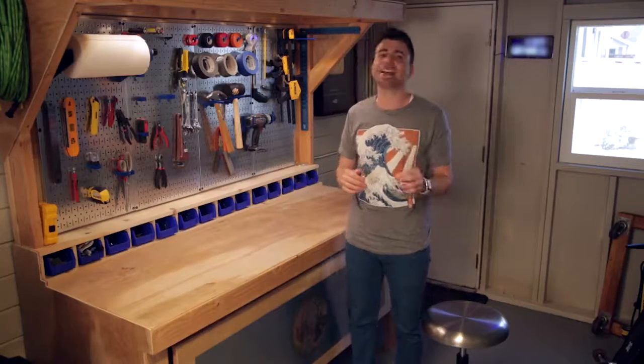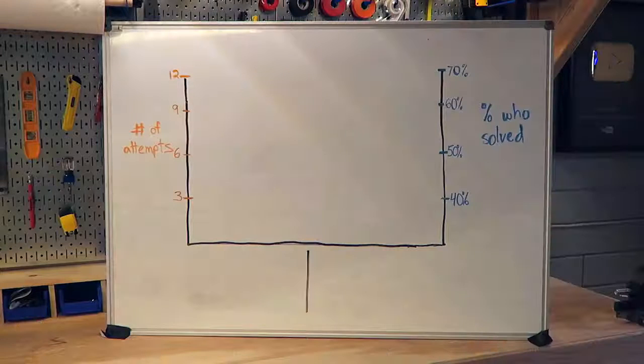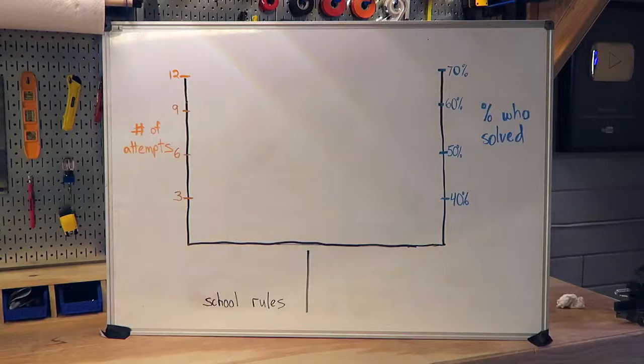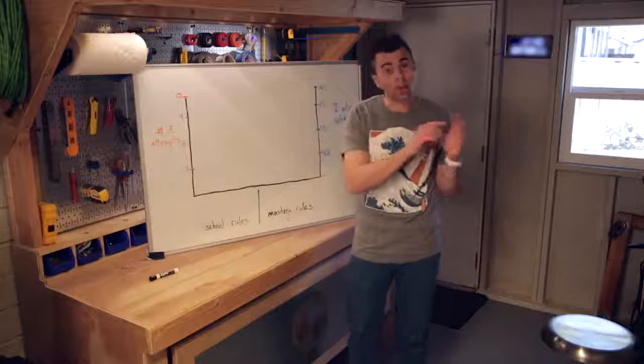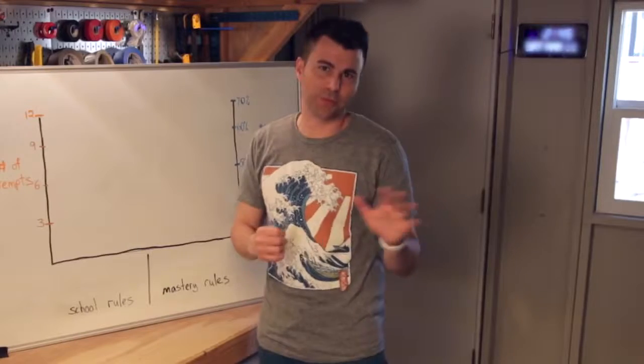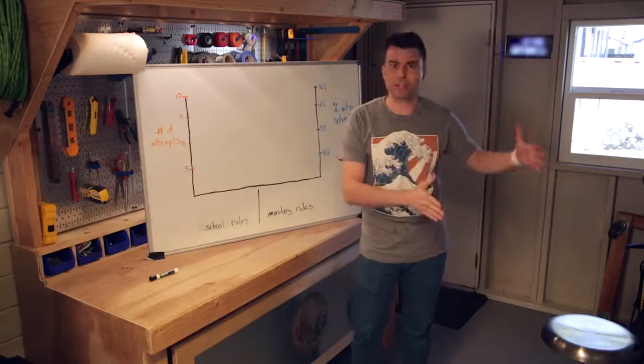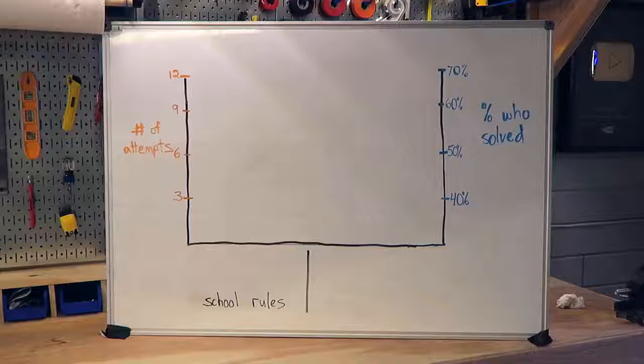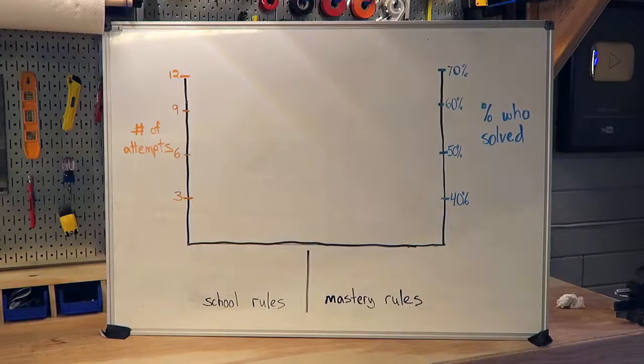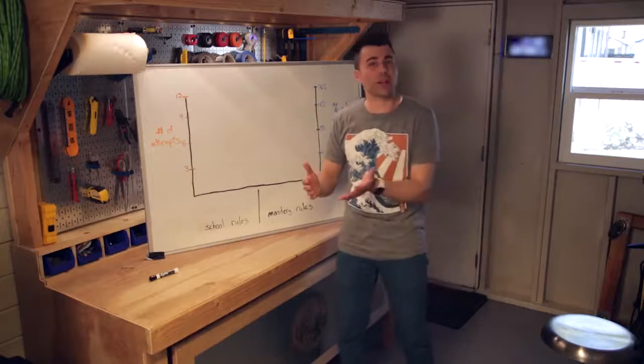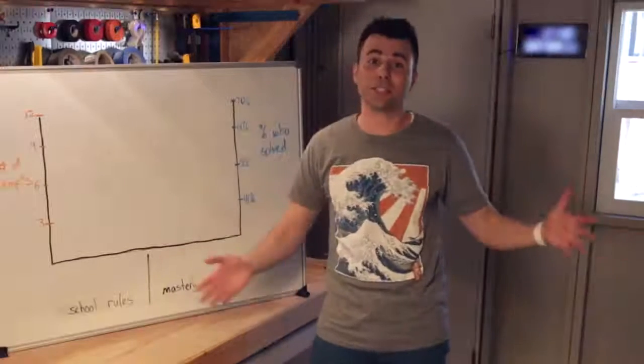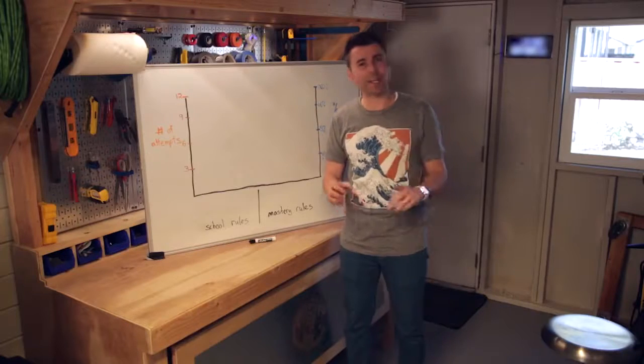We secretly assigned six different versions of that test. Half had what we call school rules, which means if you hit run and your car didn't make it all the way across, you lost five points—the same way you lose points if you get a question wrong in school. The other half had what we called mastery rules, which means you don't lose any points if you try your code and it doesn't work. There's no penalty for trying and failing.